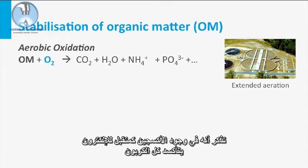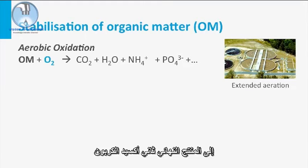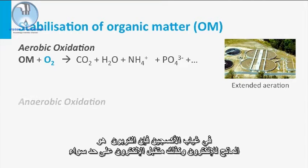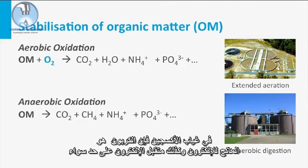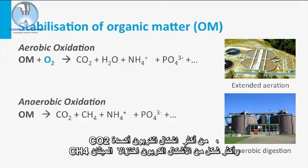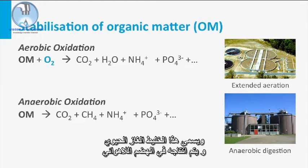In the presence of oxygen as electron acceptor, all carbon is further oxidized to the end product carbon dioxide. This occurs, for instance, in extended aeration processes. In the absence of oxygen, carbon is both the electron donor and the electron acceptor. This means that under anaerobic conditions, a gas will appear consisting of a mixture of the most oxidized form of carbon, CO2, and the most reduced form, CH4, or methane. This gas mixture is called biogas and is produced in anaerobic digesters.